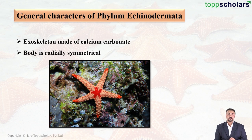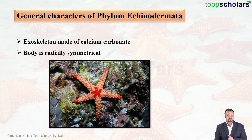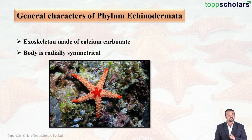Their body is radially symmetrical. Take a look at this diagram of a starfish. Radial symmetry means this starfish can be divided into two equal halves if you cut its body from the center from top to bottom. If you cut it at any angle, you will always get two equal halves, as long as you cut from the center from top to bottom.